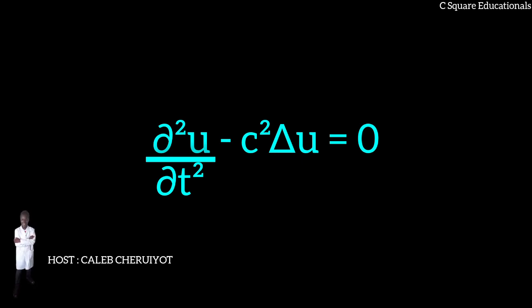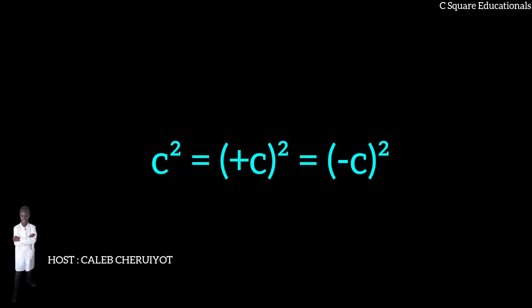The above vectorial partial differential equation of second order gives us two mutually independent solutions. From the quadratic velocity term c² = +c² = -c², it can be seen that there are two waves traveling in opposite directions, +c and -c are possible.